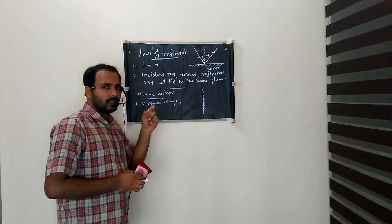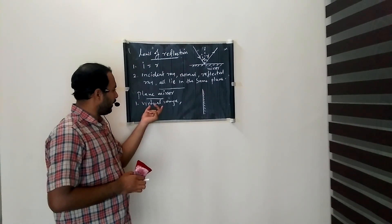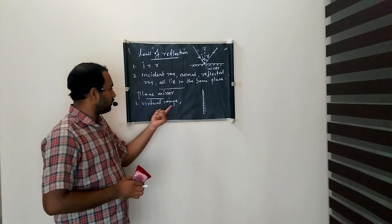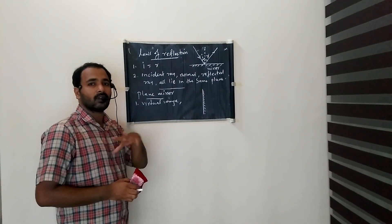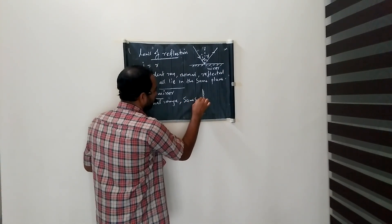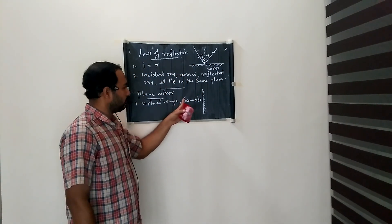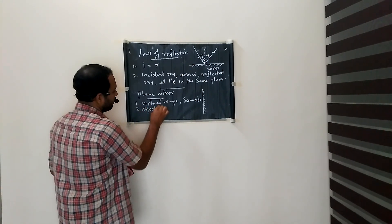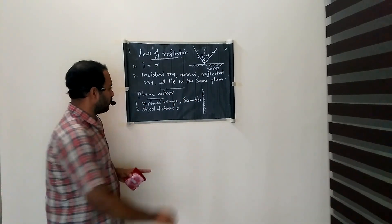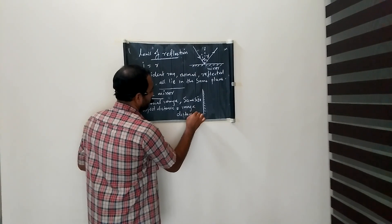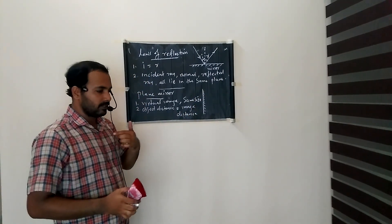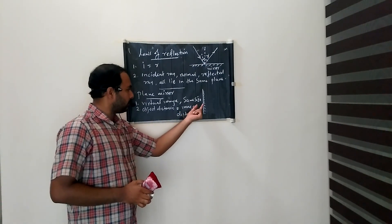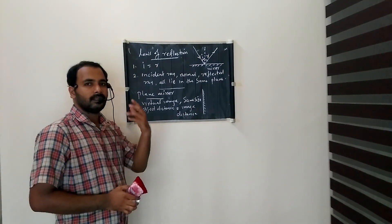What is meant by virtual image? If an image can be captured on a screen, it is called a real image. If we cannot capture the image on a screen, it is called a virtual image — it is virtual, not real. A plane mirror also forms a same-size image. The second property is that the object distance equals the image distance. Object distance is the distance between the object and the mirror; image distance is the distance between the image and the mirror. These two distances are equal.